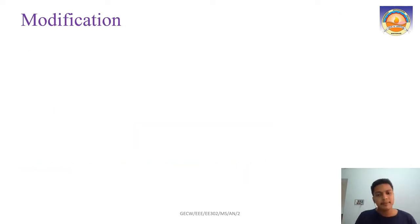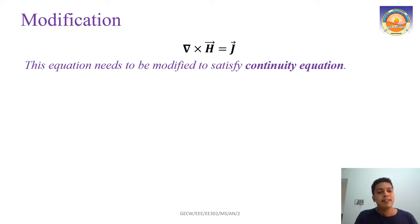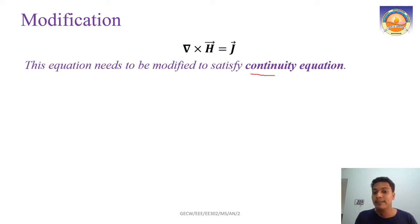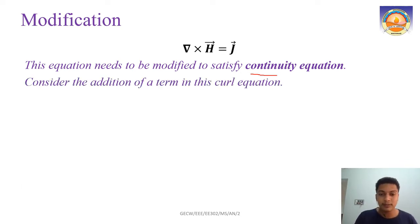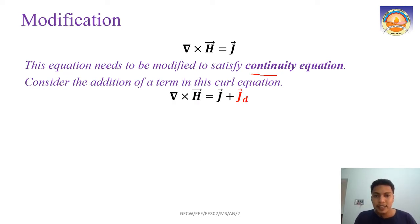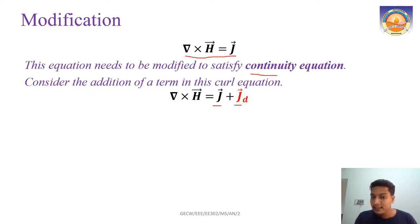The modification Maxwell makes is this: del cross H equals J needs to be modified to satisfy the continuity equation. We know the continuity equation is true for a time-varying field, so we must add an additional term to the curl equation. Del cross H equals J was the original form; now we add another term, represented as Jd, to the right-hand side.